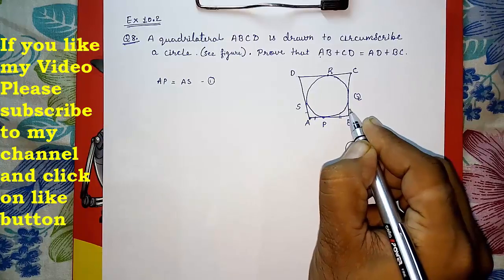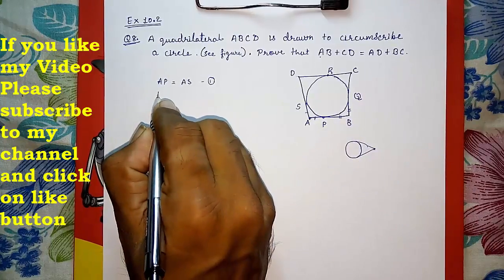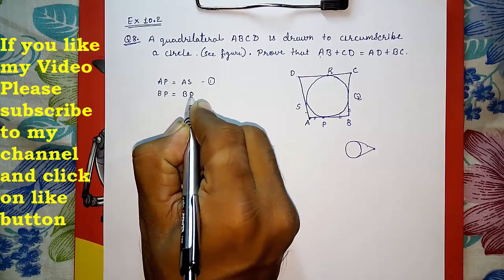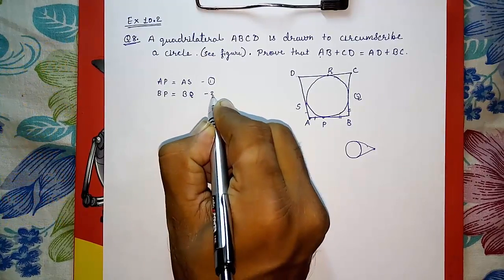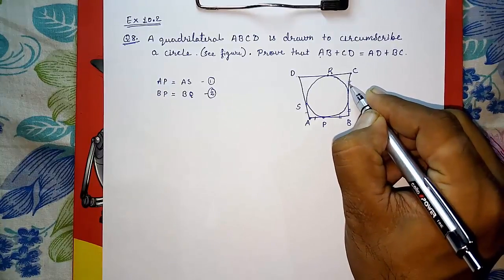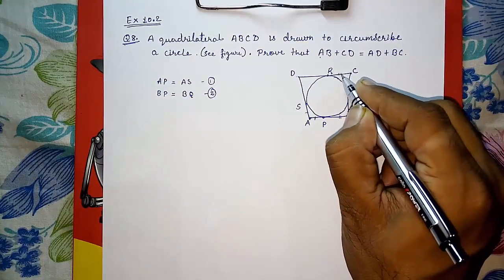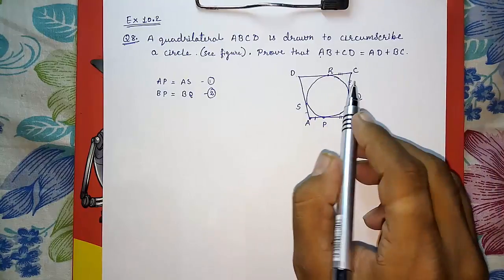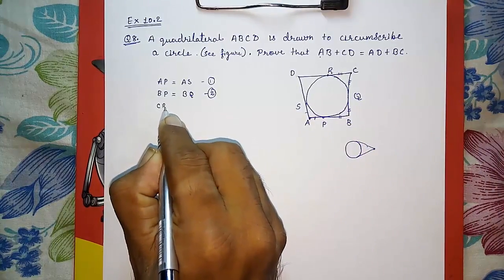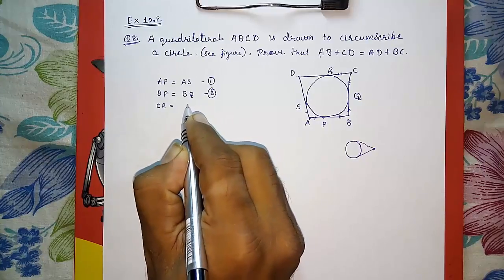BP is equal to BQ. That is result number two. Then CQ equals to CR, but I am going to write CR in front. Here I am going to write CR, and here I am going to write CQ.